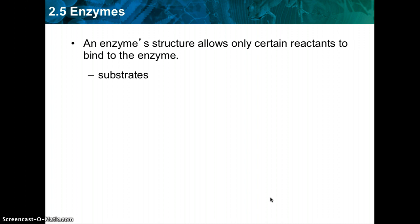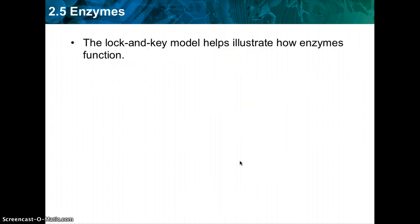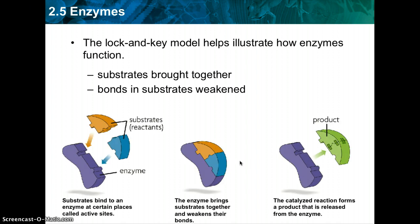The reactants of enzyme-catalyzed reactions are known as substrates. Here we have the substrates — these are our reactants — and the substrates are going to bind to our enzyme. The substrates bind to a site on the enzyme called the active site. The active site and the substrates have a complementary shape, meaning they fit together like a puzzle — they fit so precisely that the active site and substrate are often compared to a lock and key.